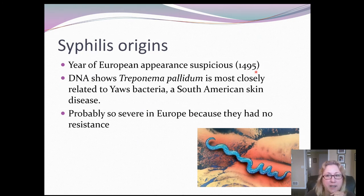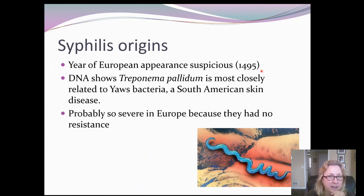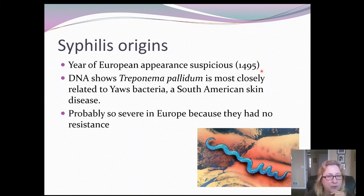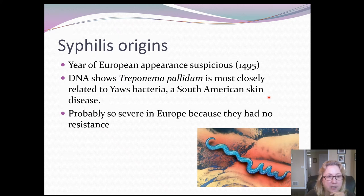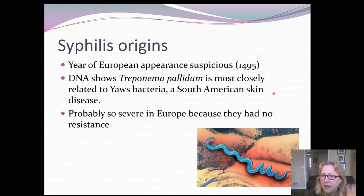1495 is the year of origin, and it first appeared in port cities. That seems very suspicious because 1492 was the year Columbus first landed in the Americas, and from then on there was a lot of ship traffic back and forth between North and South America and Europe. DNA analysis shows the bacteria that causes syphilis is most closely related to the yaws bacteria, which is endemic in South America. Yaws causes a very mild skin condition, is not sexually transmitted, and most people are exposed to it as a kid, develop mild symptoms, become immune, and it goes away.